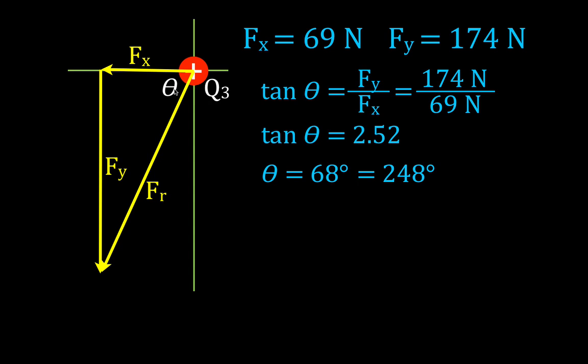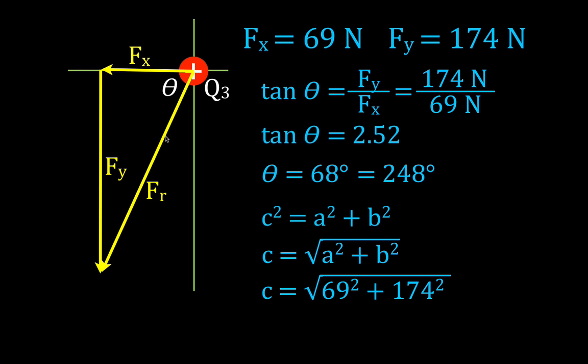Okay, now we need to find out the length of this side, or the length of the hypotenuse, or the magnitude of the force. It's really just a triangle. We're going to use the Pythagorean theorem. C squared equals A squared plus B squared. We want to solve for C, which means C is equal to the square root of A squared plus B squared. A is 69 squared. B is 174 squared.